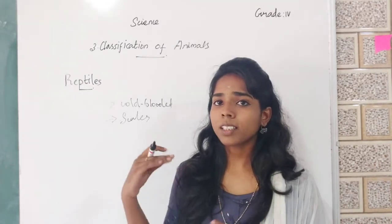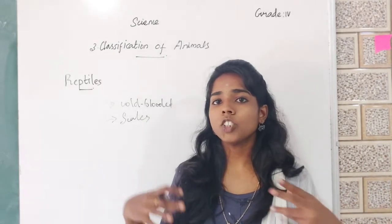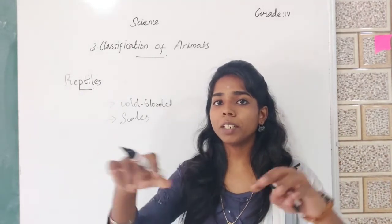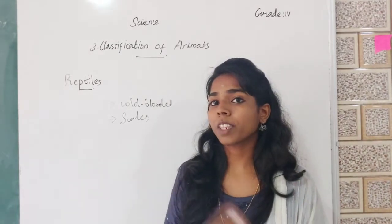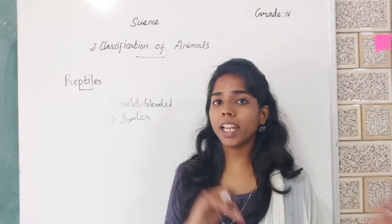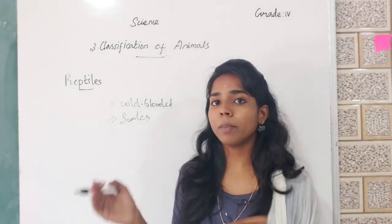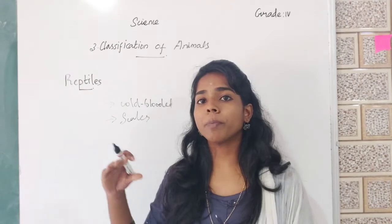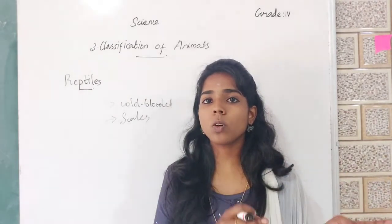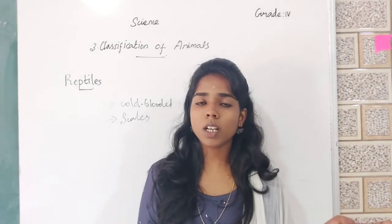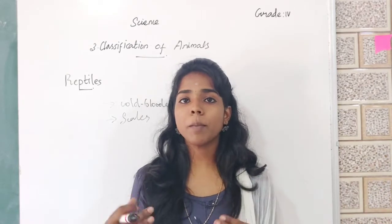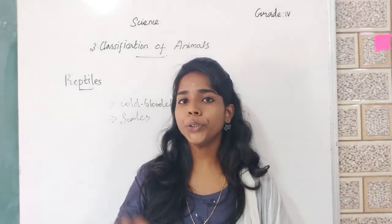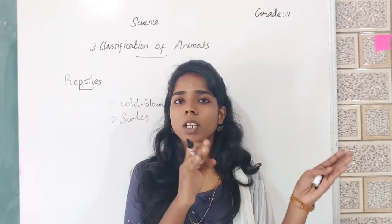Reptiles like lizard and chameleon can change their body color to blend with the surroundings to hide from their enemies. This process is known as camouflage. So what is meant by molting? Snakes shed their old skin and grow a new one from time to time — this process is known as molting. What is meant by camouflage? Reptiles like lizard and chameleon change their body color to blend with the surroundings to hide from their enemies — this process is known as camouflage.